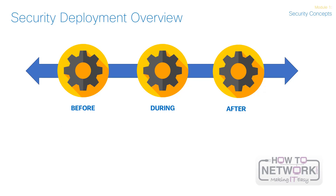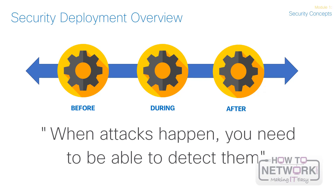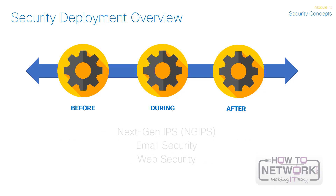The next phase is during. When attacks happen, you need to be able to detect them. You need to have the best threat detections available. Once an attack has been detected, you can block it and protect the environment. During the attack, next-generation IPS or intrusion prevention systems, email and web security solutions help detect, block, and defend against attacks that have penetrated the network and are in progress.